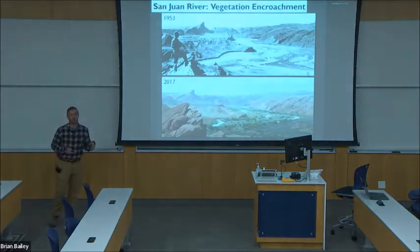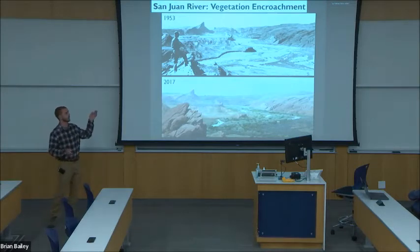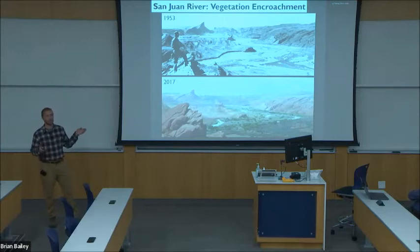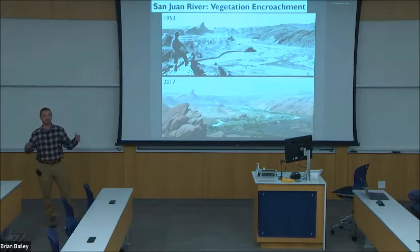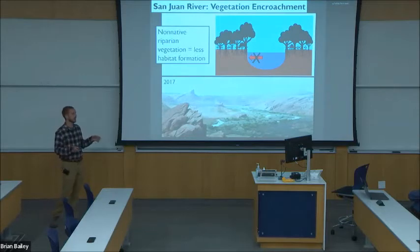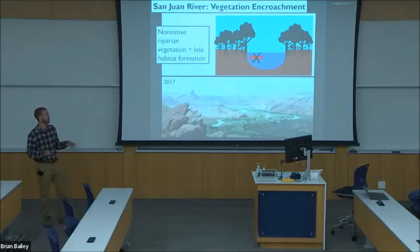This lack of interaction with the floodplain has contributed to the encroachment of vegetation on the San Juan River. The top photo shows historical conditions, and the bottom photo is representative of modern-day conditions, where non-native vegetation, primarily Russian olive seen here in the light green, now crowds the riparian area. This is a problem because the roots of these non-native vegetation have armored the riverbanks and have further reduced the river's ability to shift and create that complex habitat.